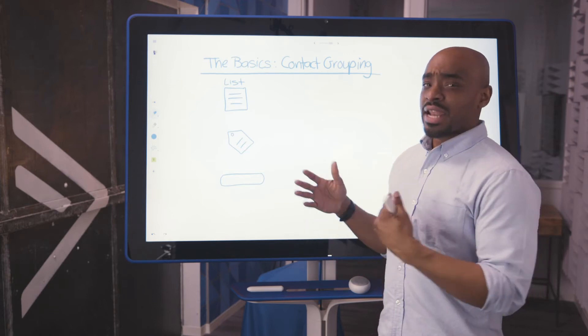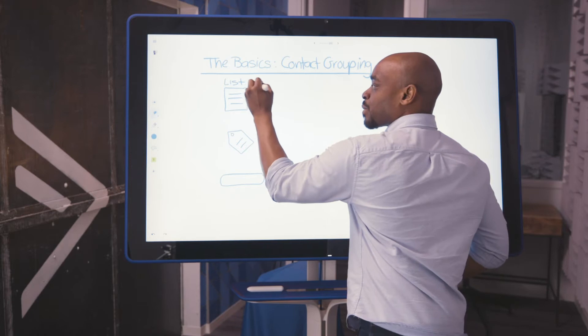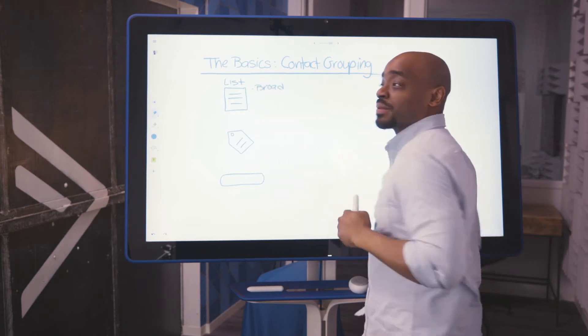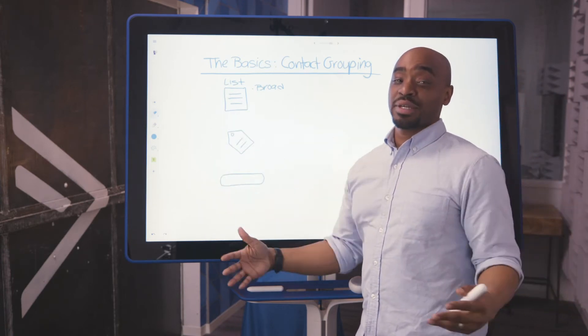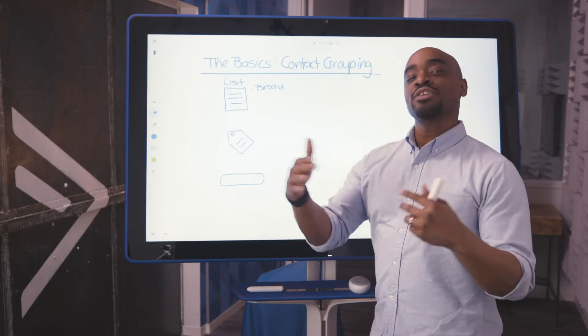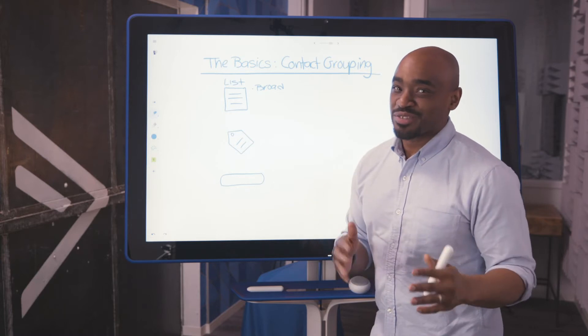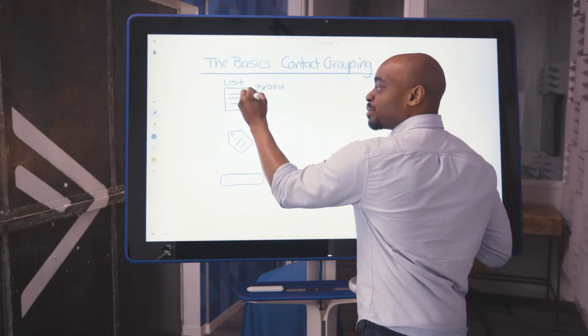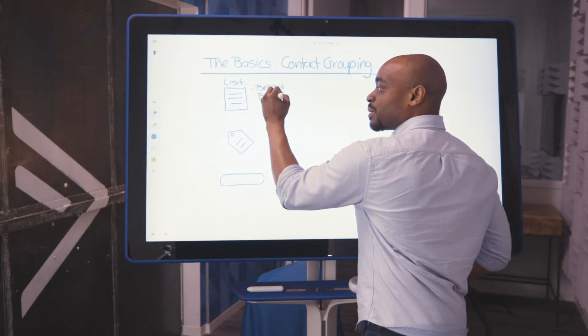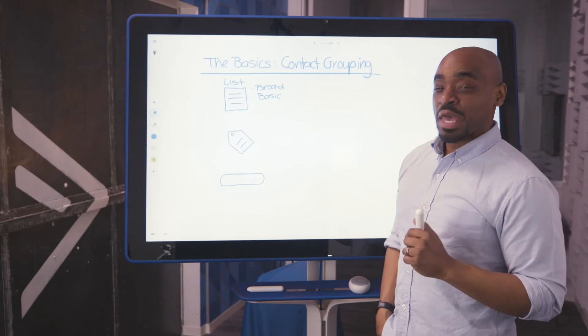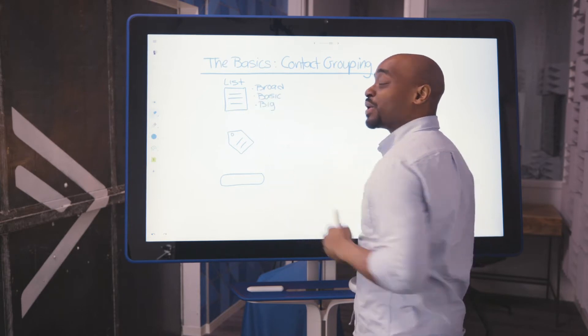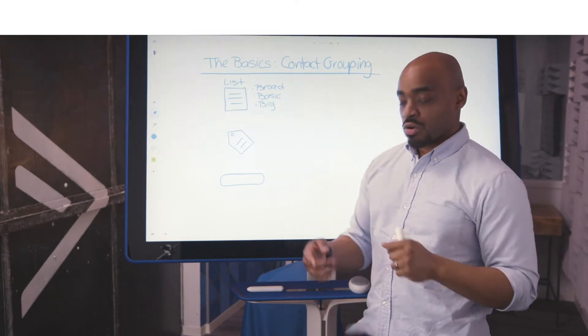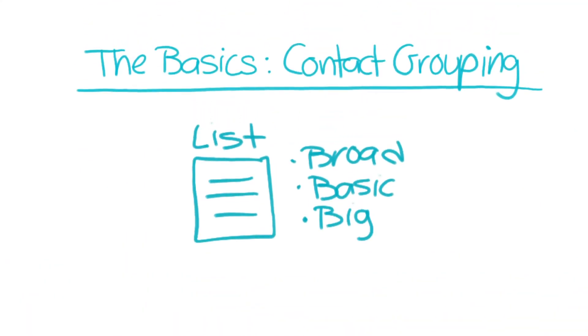When I think of lists in ActiveCampaign, I'm thinking of a broad means of grouping my contacts. This means the people on this list have the most in common. The attributes between the contacts on the list does not change very much. So that means it's not only broad, but it's also basic. And I've got one more B for you. It's more than likely going to be big. So when it comes to lists in ActiveCampaign, think of it in terms of broad grouping by basic attributes, and it's probably going to result in a big list.